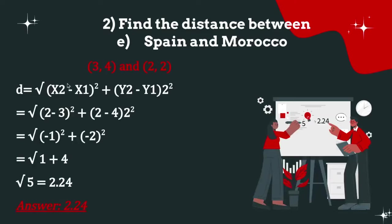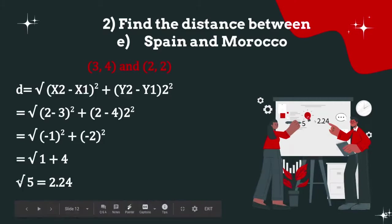Find the distance between Spain (3, 4) and Morocco (2, 2). Using the distance formula, replacing the numbers: √((2 - 3)² + (2 - 4)²) = √((-1)² + (-2)²) = √(1 + 4) = √5. Using a calculator, we get 2.24.